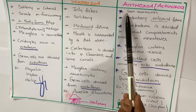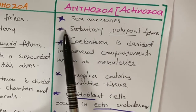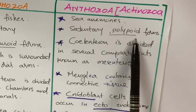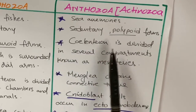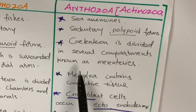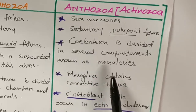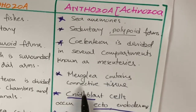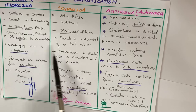Next, Anthozoa — Anthozoa are also known as Actinozoa. These are commonly known as sea anemones. They lead a sedentary life and are mainly polypoid forms; the medusoid form is absent. The coelenteron is divided into several compartments known as mesenteries.